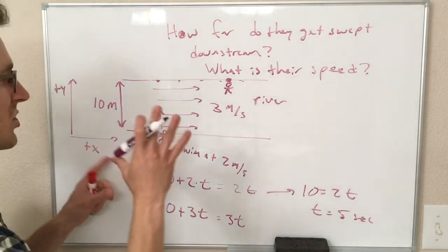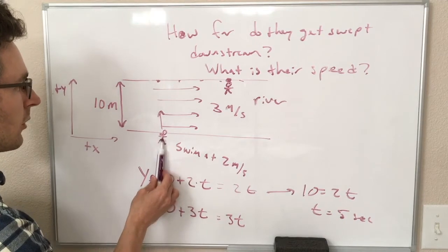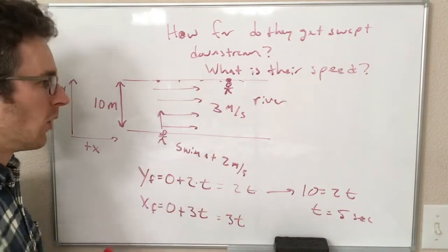So, if we were watching this motion from above with these constant velocities, this person isn't like going like this and then going like this. Both of these are happening at once,